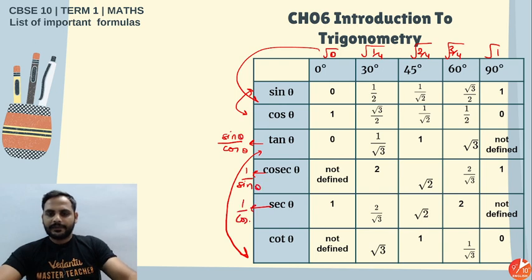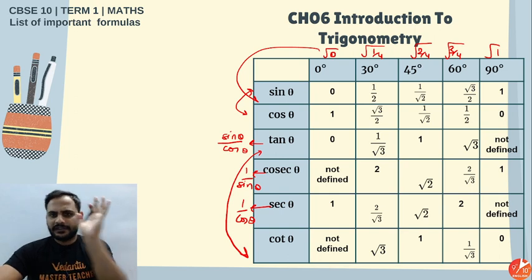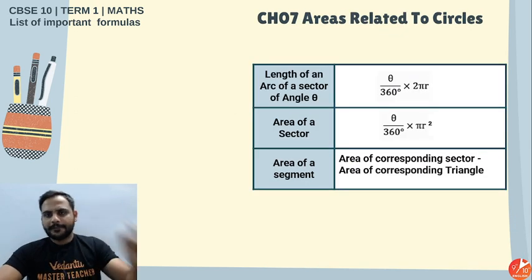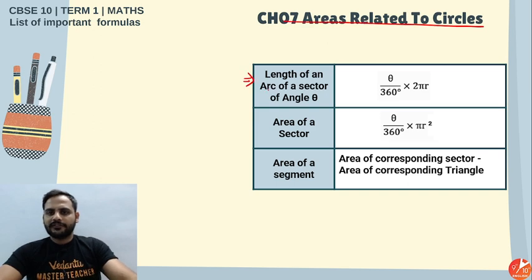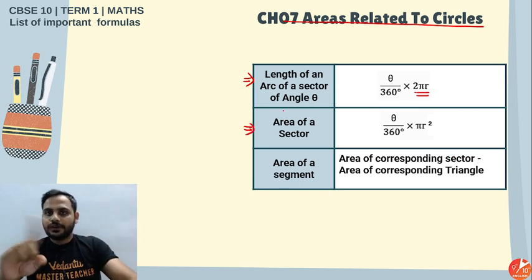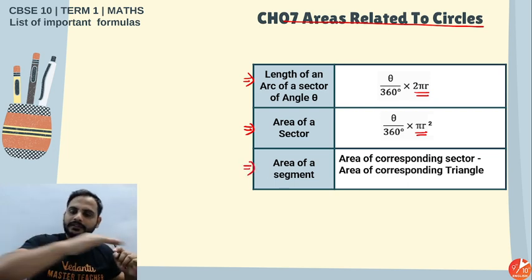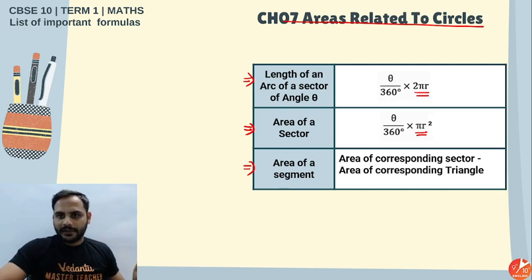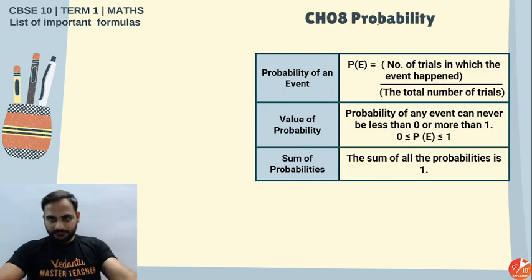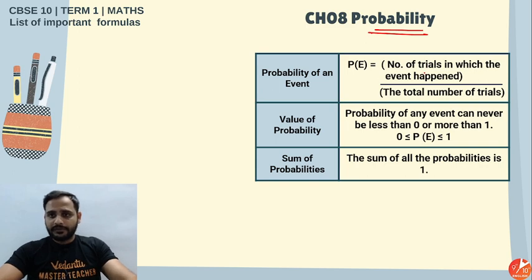Practice the trigonometric table — it's all about practice. For areas related to circles: length of an arc = (θ/360) × 2πr, area of a sector = (θ/360) × πr², and the area of a segment = area of the sector minus the area of the triangle.